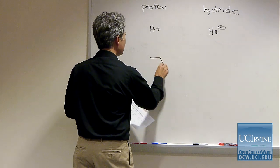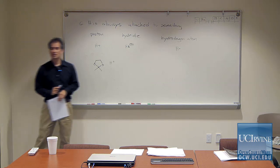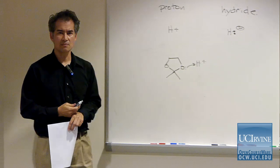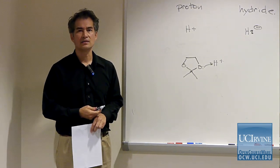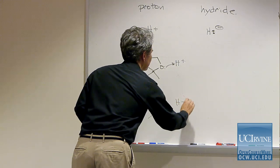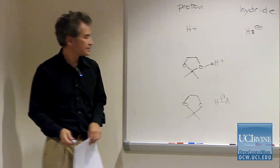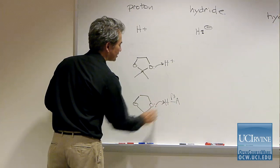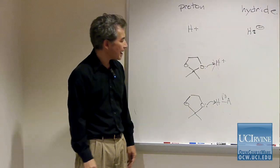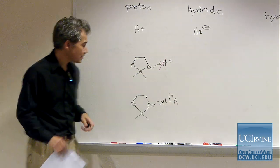The correct way to draw protonation — for example, of a ketal — is to show that the H was attached to something. If you don't know what the H was attached to, represent it as some generic acid HA. There is no bottle of H+ that you can get in the lab. Similarly, there's no free nucleophilic hydride that floats around in solution — what you have is a tetrahydridoaluminate species, a hydride donor. The functional group being donated is a hydride with a pair of electrons, but nowhere in solution is there H− floating free.